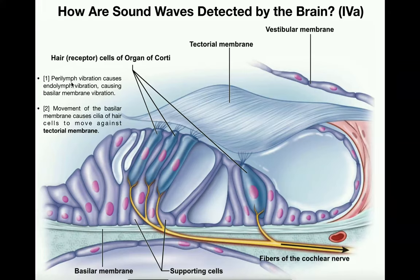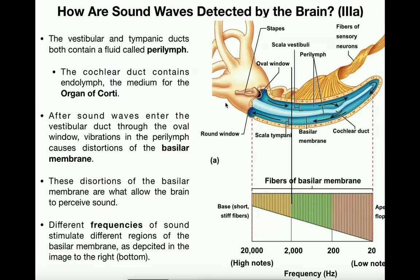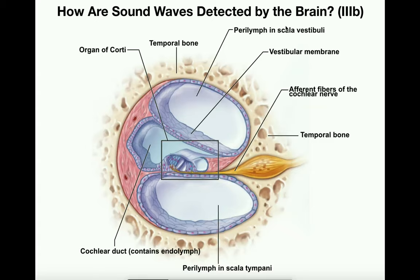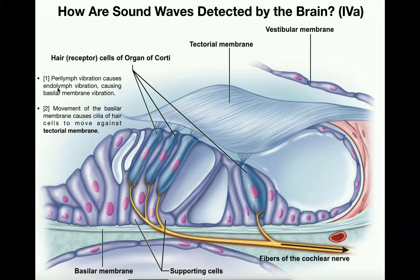Step one of the physiology: perilymph of the vestibular duct causes vibration of the endolymph of the cochlear duct. Vibrations come through the oval window and cause vibrations in the vestibular duct's perilymph. Just as vibration of the malleus caused vibration of the incus and stapes, vibration of this perilymph causes vibration of the endolymph in the cochlear duct. Then vibration of the endolymph causes vibration of the basilar membrane — specifically the region corresponding to the frequency, 2,000 hertz in our example. That causes the hair cells to also vibrate.